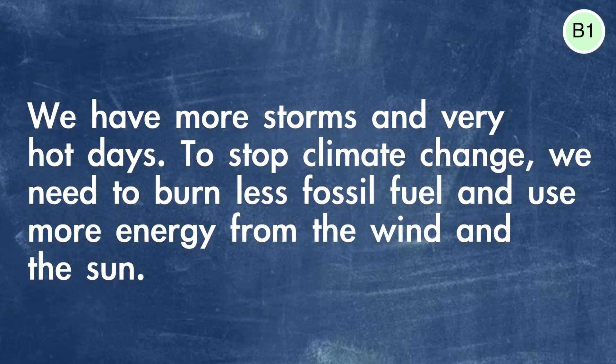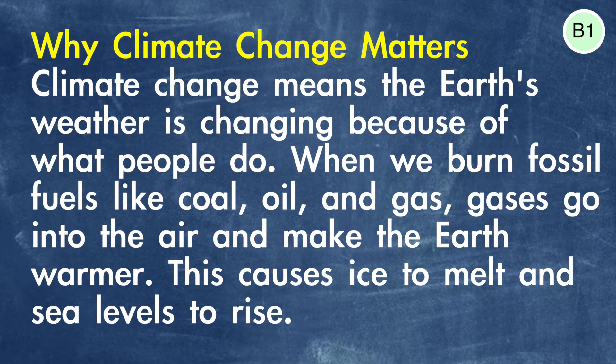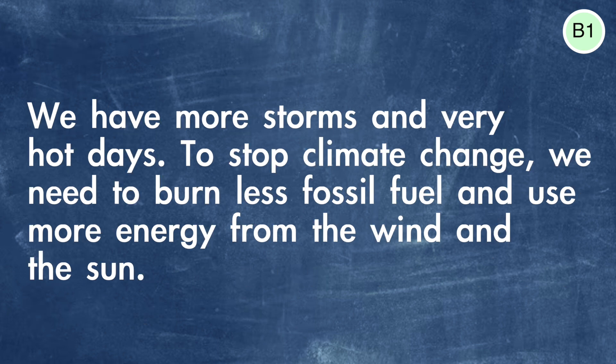We have more storms and very hot days. To stop climate change, we need to burn less fossil fuel and use more energy from the wind and the sun. So this text is B1 because we can explain things much more clearly and in more detail. We've got new terms such as fossil fuels and 'gases go into the air,' and there are more connections between ideas — 'this causes ice to melt' or 'to stop climate change.' Sentence structure is more complex than A2 but it's still not too difficult. This is a really good level for learners who can understand basic explanations but need more help with details.